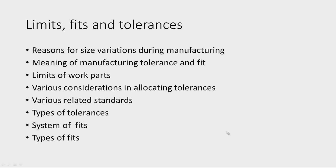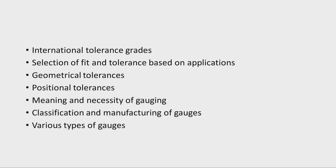We will discuss the reasons for size variations during manufacturing, the meaning of manufacturing tolerance and fit, the limits of work parts such as upper and lower limits, and the various considerations in allocating tolerances. We will also learn about related standards, types of tolerances, system of fits, types of fits, international tolerance grade, its necessity, how to select the kind of fit depending upon the application, and geometrical and positional tolerances.